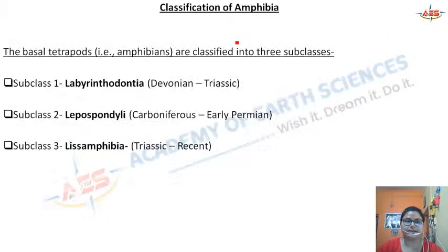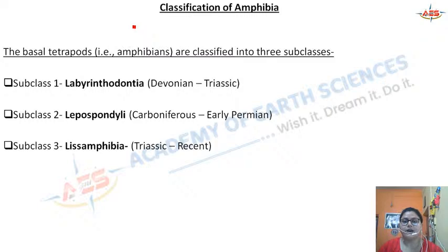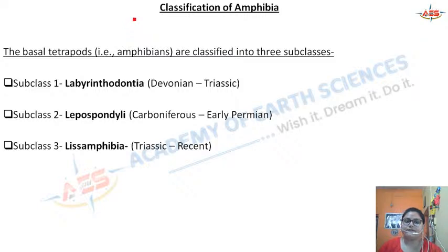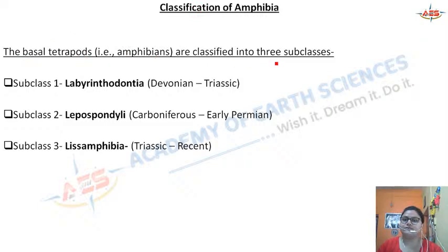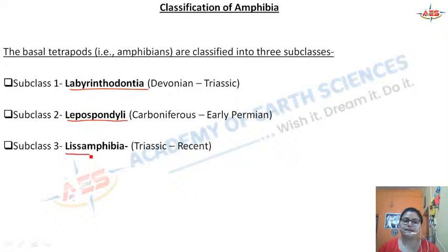Next is the classification of amphibia. Amphibians — who they are, their characters, and where they evolved from — the crossopterygian fishes. The basal tetrapods, that is the amphibians, are classified into three subclasses: the Labyrinthodontia (Devonian to Triassic forms), the Lepospondyli (Carboniferous to early Permian forms) — these two are extinct forms — and the Lissamphibia, which are the modern amphibians.